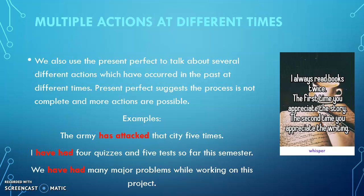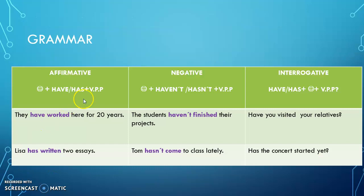El último uso son acciones que hemos hecho en varias ocasiones desde el pasado hasta ahora. Por ejemplo, 'The army has attacked that city five times' — desde el pasado al presente el ejército ha atacado esa ciudad cinco veces. 'I have had four quizzes and five tests so far this semester' — desde enero hasta ahora has tenido esos exámenes. 'We have had many major problems when working on this project' — desde que empezó el proyecto han tenido muchos problemas. Eso es lo que significa acciones repetidas en distintas ocasiones.